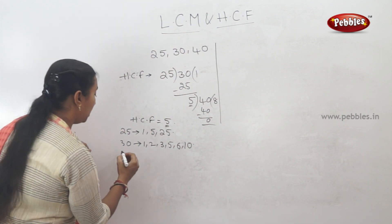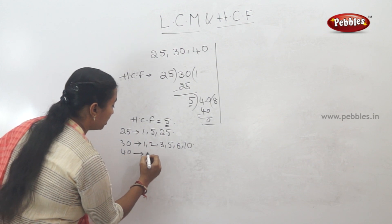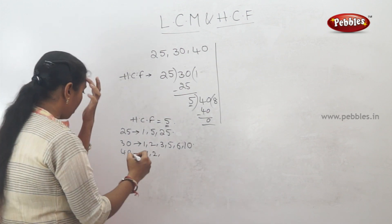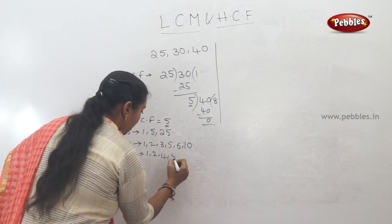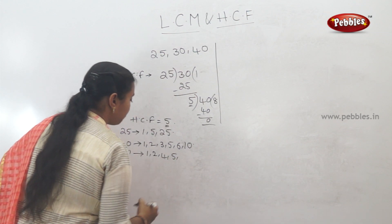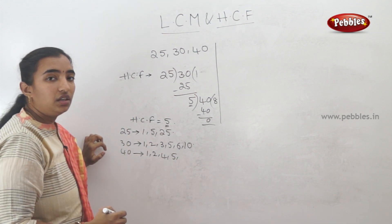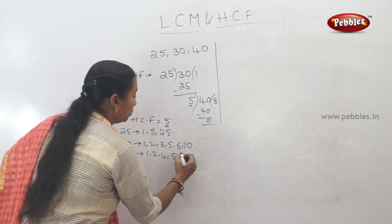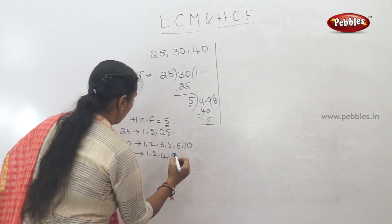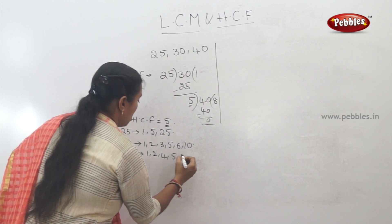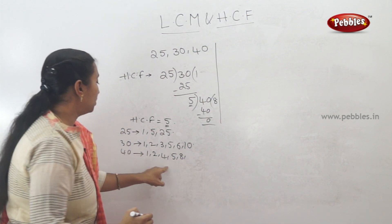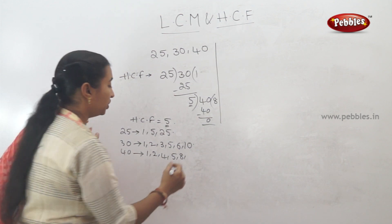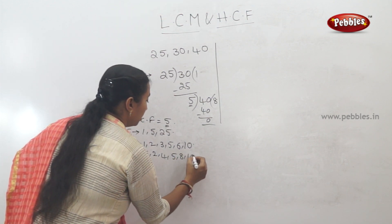Next, factors of 40. The factors of 40 are: 1, 2, 3, 4, 5, 6, 7, 8, 9, 10.